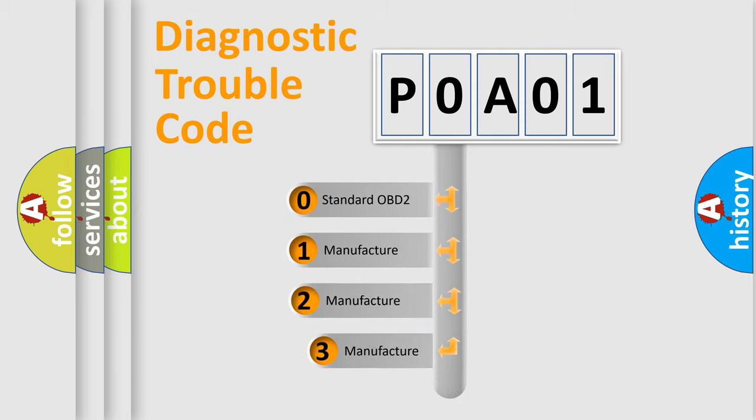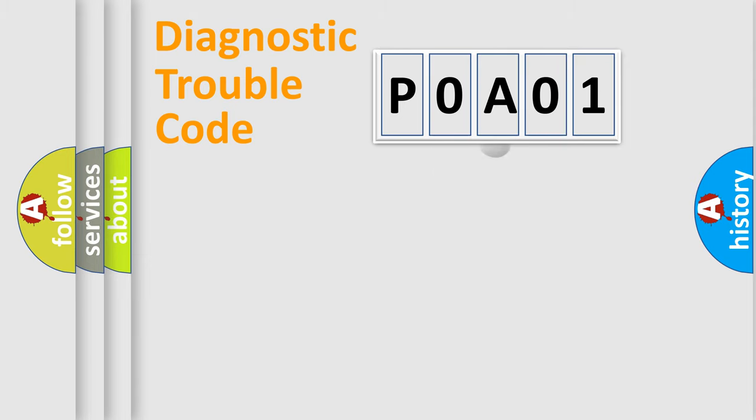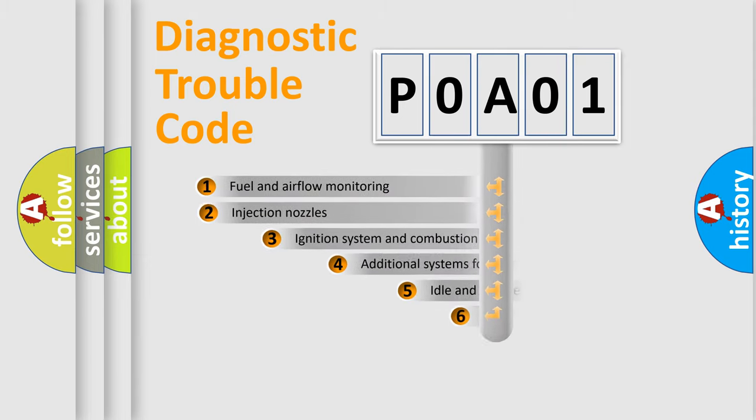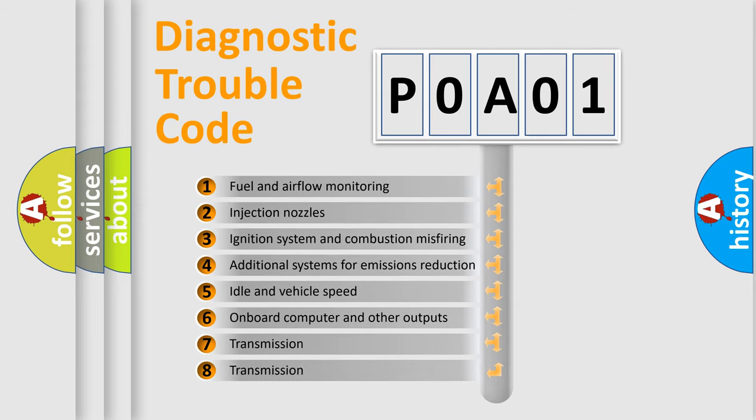If the second character is expressed as zero, it is a standardized error. In the case of numbers 1, 2, or 3, it is a more specific expression of the car-specific error. The third character specifies a subset of errors.